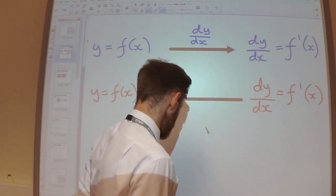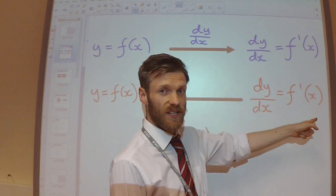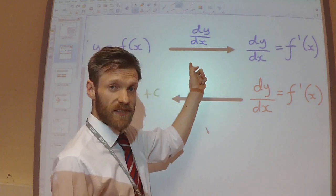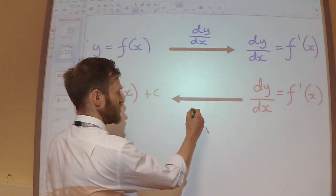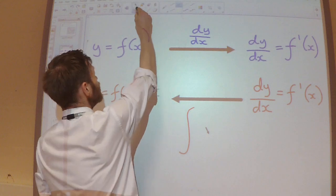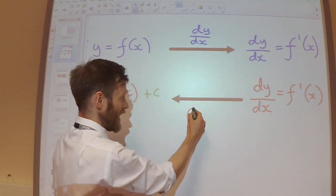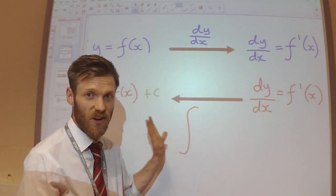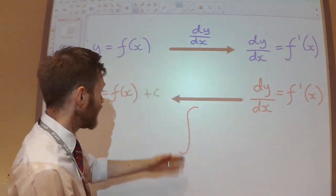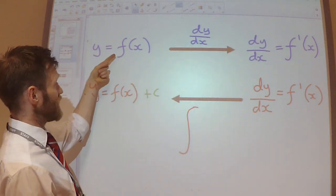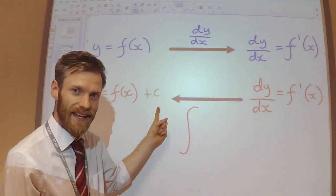So the reverse process: if I've got f'(x), my gradient function, and I do the reverse differentiation — so I integrate it. The symbol we use for integration is like a stretched out S. We'll use that symbol a lot for the rest of the A level. If I integrate my gradient function, I get back to the function that I started with, f(x). But you'll notice that there's a plus c here — we'll come to that in a few moments.